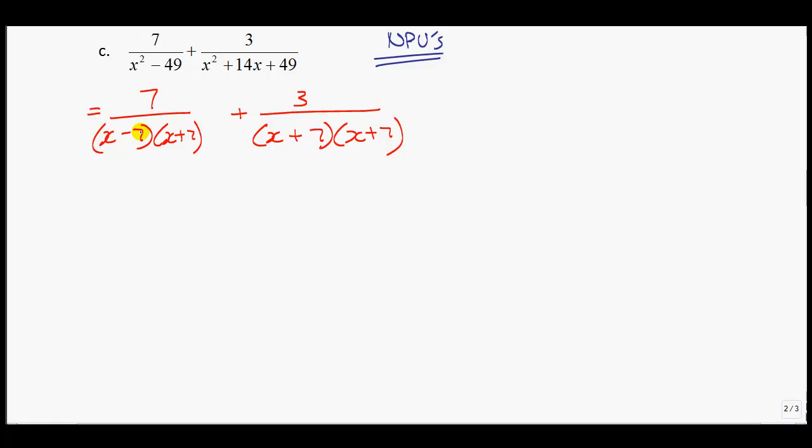If I factor the first term, x squared minus 49, you'll notice that's a difference of squares. You get x minus 7 and x plus 7. And the trinomial over here is x plus 7, all multiplied by x plus 7. Dealing with my NPVs now, notice that x cannot equal 7 or negative 7. So my NPVs would be x cannot equal plus or minus 7.